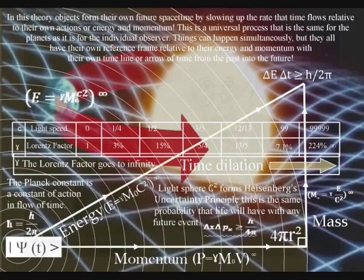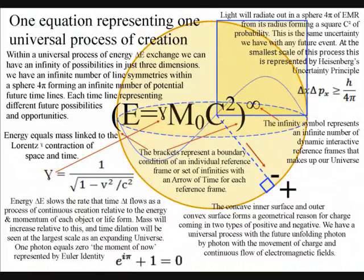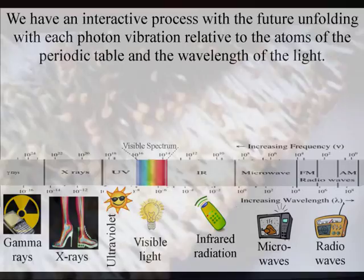This geometrical process can be represented by just one equation with the Lorentz contraction of space and time being placed between the energy and mass of Einstein's famous equation. This represents a universal process of continuous energy exchange or continuous creation with the future unfolding photon by photon relative to the energy of each object or life form.